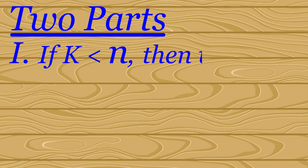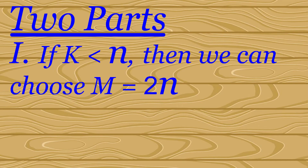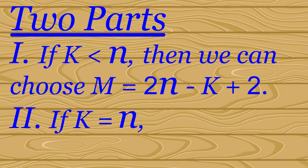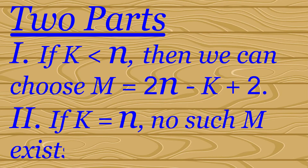First, we will show that if K is smaller than N, then the player can perform a strategy that will guarantee a win after 2N − K + 2 turns. In the second part, we will show that if K is equal to N, then no strategy exists that will guarantee a win after a fixed number M of turns.